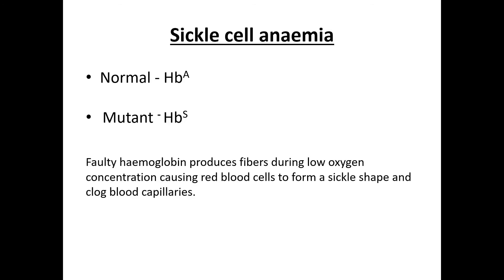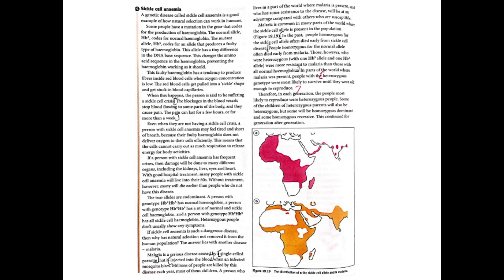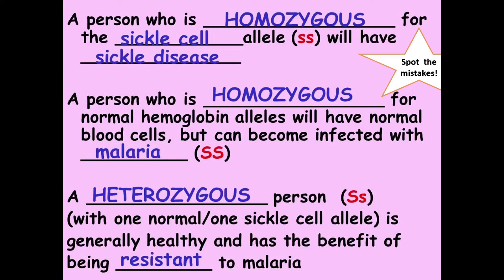One example of stabilising selection is sickle cell anaemia. We have HbA and HbS alleles. Sickle cell anaemia occurs when faulty haemoglobin produces fibres during low oxygen concentration, causing red blood cells to form a sickle shape and clog blood capillaries. It is common in Africa. A person who is homozygous SS for the sickle cell allele will have sickle cell disease. A person who is homozygous AA with normal haemoglobin alleles will have normal blood cells but can become infected with malaria. A heterozygous individual (HbA HbS) is generally healthy and has the benefit of being resistant to malaria.